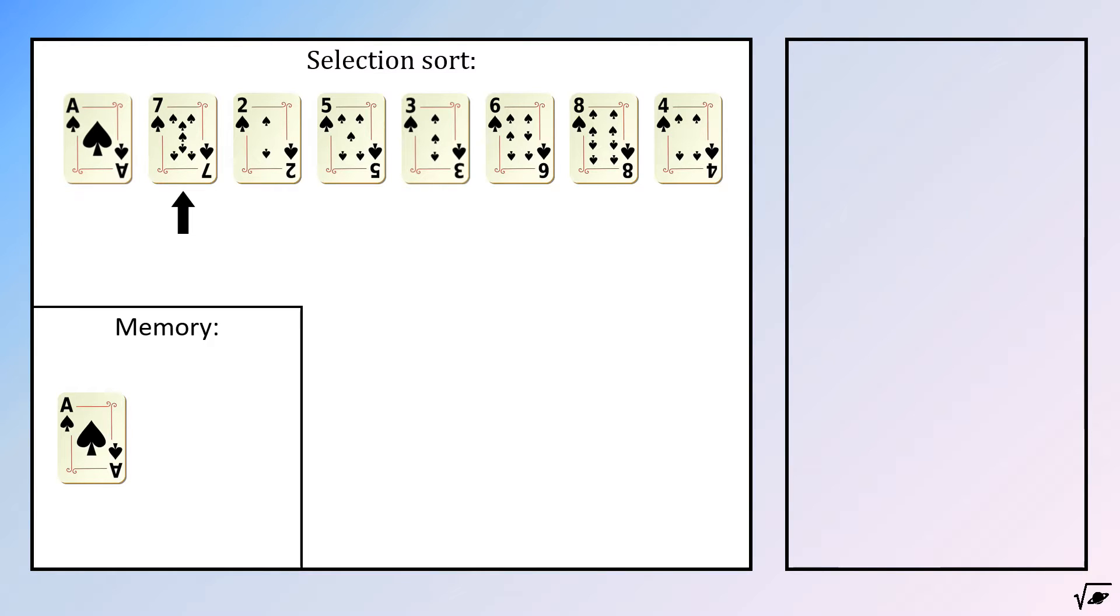This second iteration will find the smallest number, of course number 2. That card will now be swapped with the second spot, since this was the second iteration. When we repeat this algorithm 5 times more, we will find our goal, a sorted list.